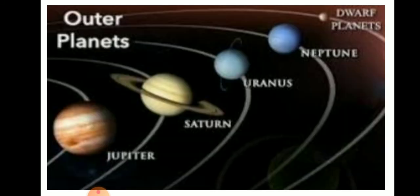Let us now discuss about outer planets. Jupiter, Saturn, Uranus, and Neptune are known as the outer planets due to their location from the sun. Because these planets are far away from the sun, they are called outer planets.